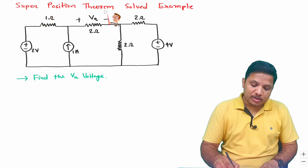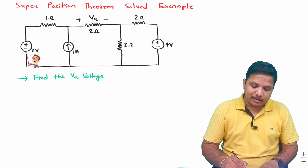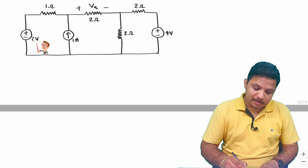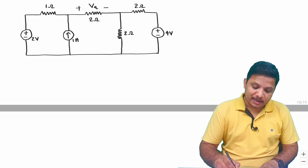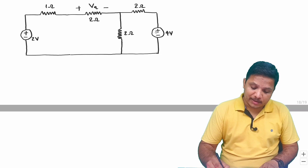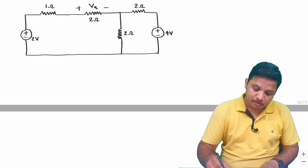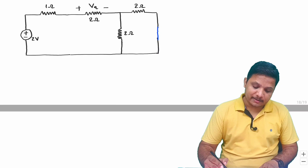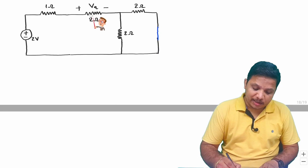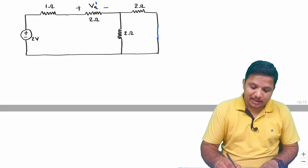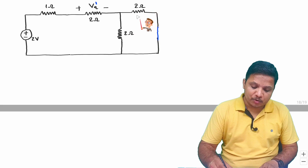Let us apply the superposition theorem by first considering the 2 volt voltage source and finding the value of Va due to that. We need to consider this 2 volt source only, so the current source should be open circuited and this other voltage source should be short circuited. Let us call the resulting voltage Va dash, due to this voltage source.